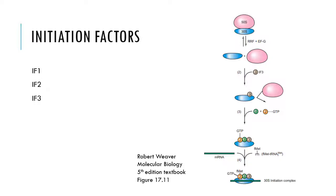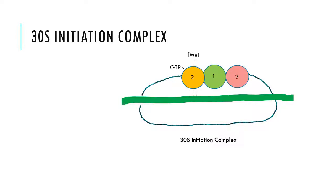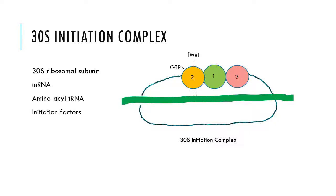As always, in eukaryotes this is a bit more complicated and there are more initiation factors that are needed. The 30S initiation complex consists of the 30S ribosomal subunit, mRNA, the FMET-tRNA-FMET, the initiation factors, and GTP.